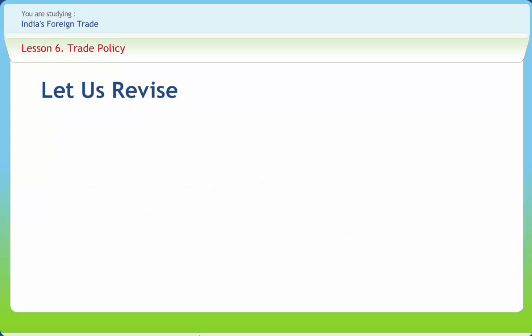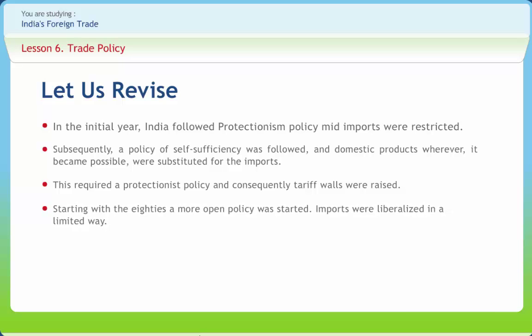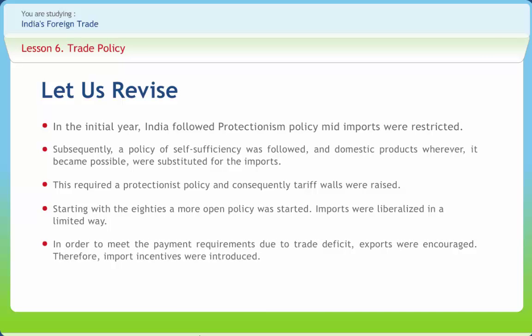Let us briefly revise what we have studied. In the initial years, India followed a protectionism policy and imports were restricted. Subsequently, a policy of self-sufficiency was followed, and domestic products, wherever possible, were substituted for imports. This required a protectionist policy and consequently tariff walls were raised. This policy more or less continued till the late 1970s. Starting with the 1980s, a more open policy was started. Imports were liberalized in a limited way. In order to meet payment requirements due to trade deficit, exports were encouraged and import incentives were introduced.